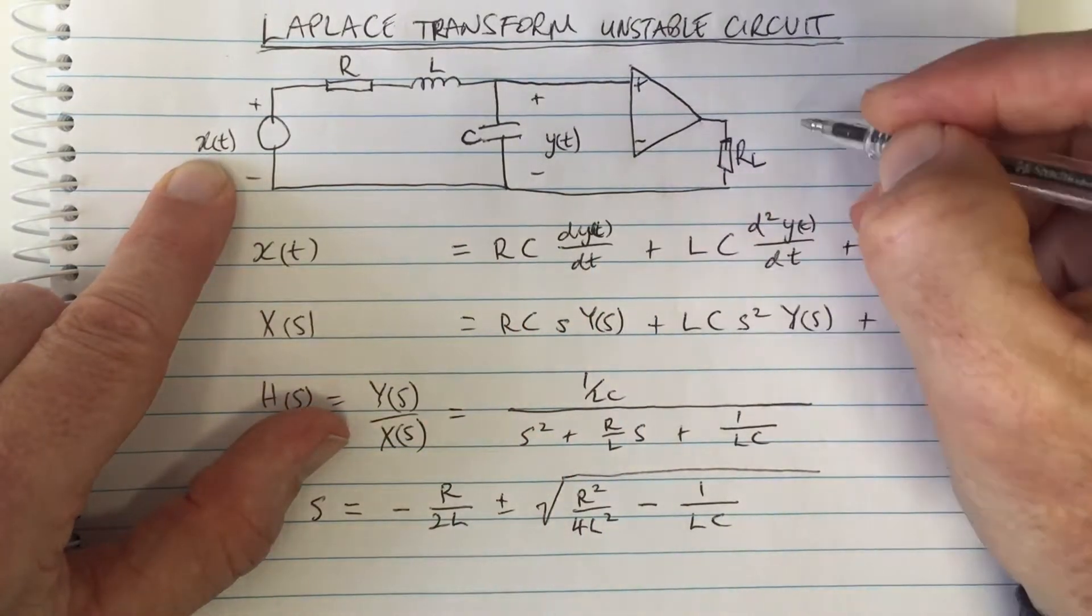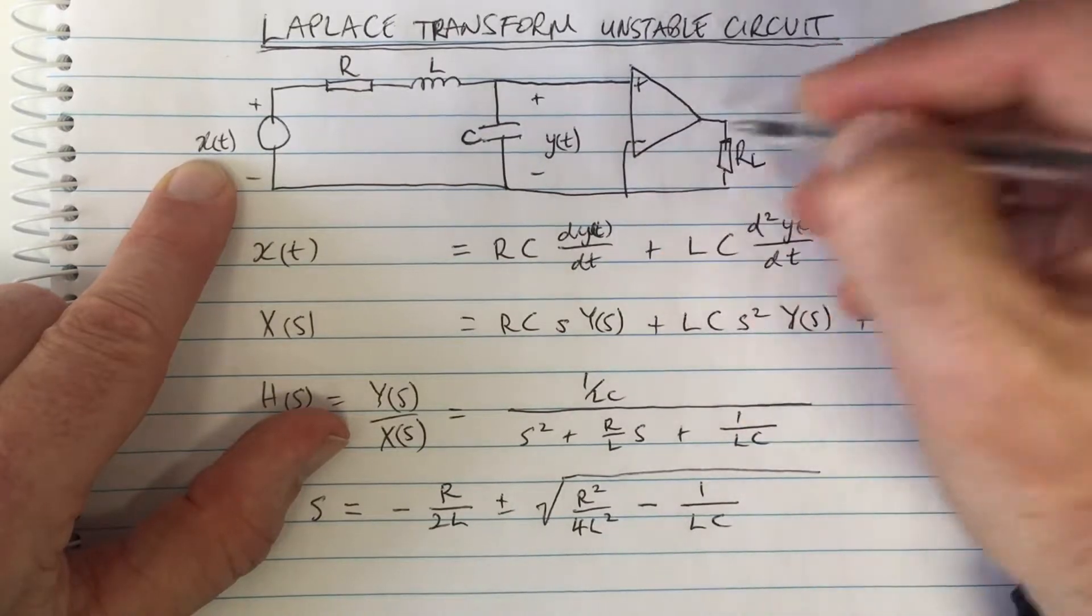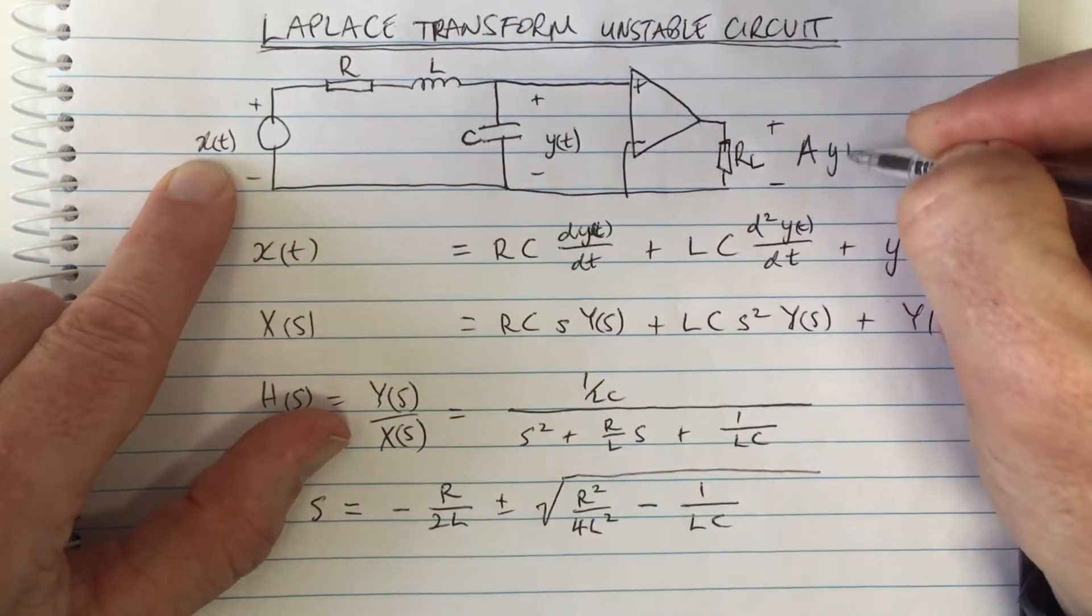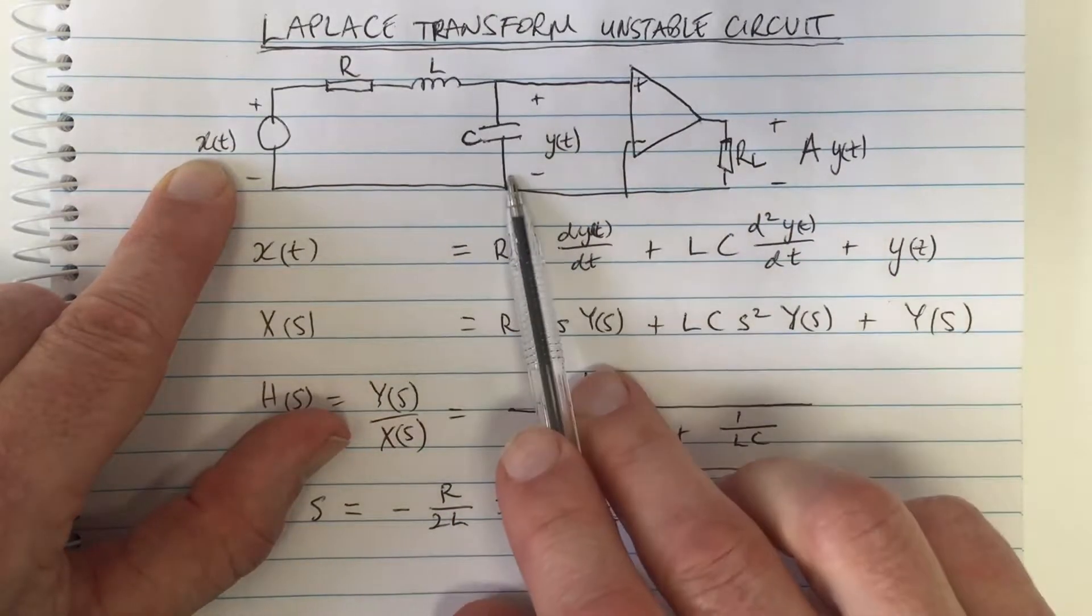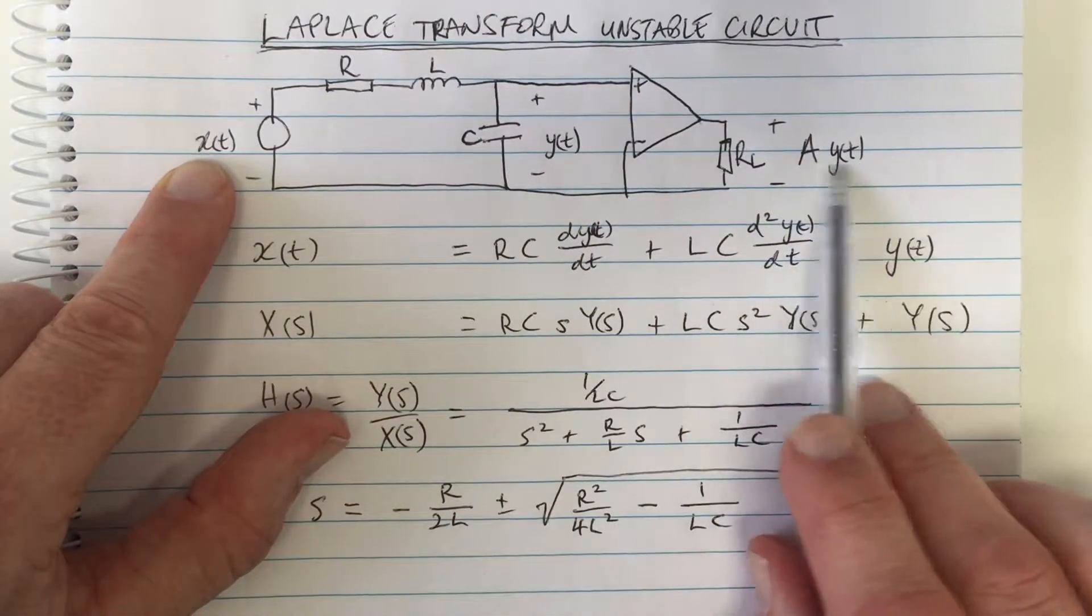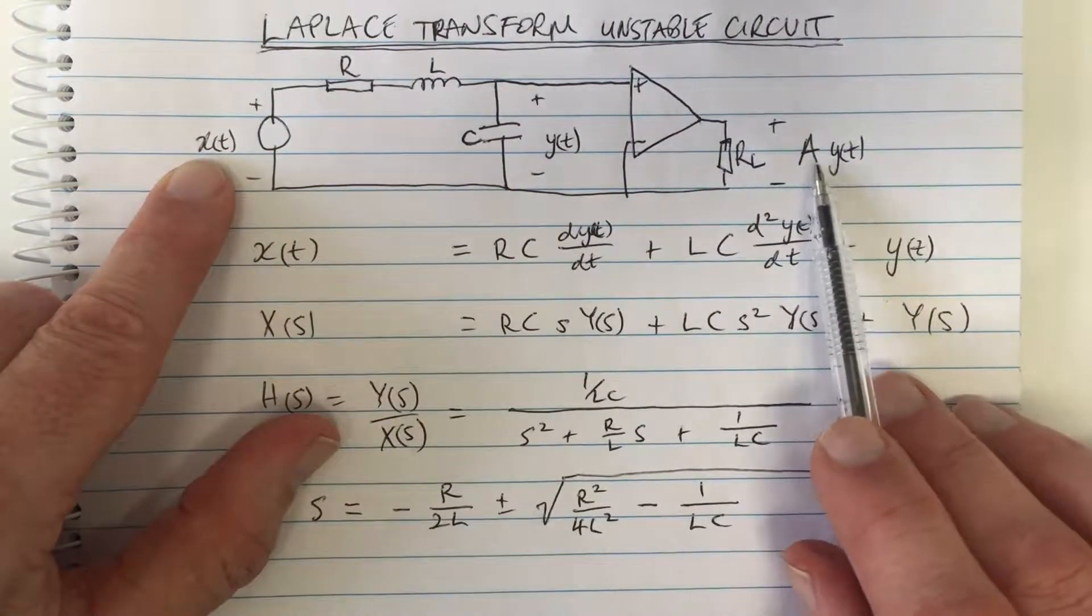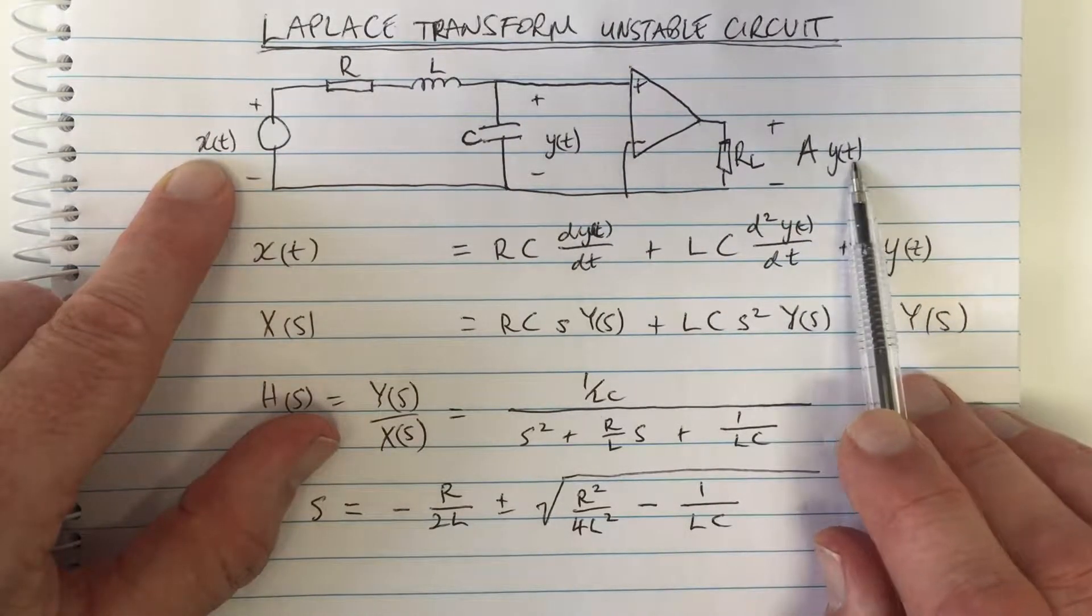This voltage at the output of our amplifier is now an amplified version of the voltage across the capacitor. This is a typical amplifier, a simplified version, but this is the general situation.